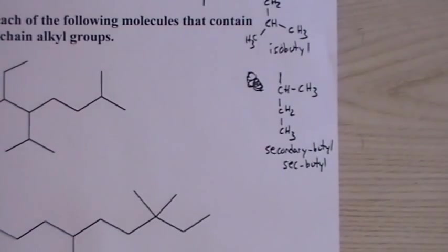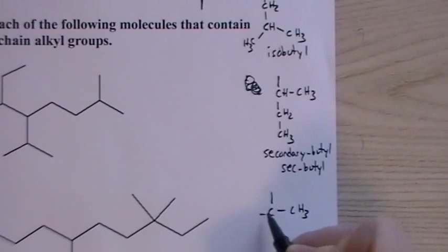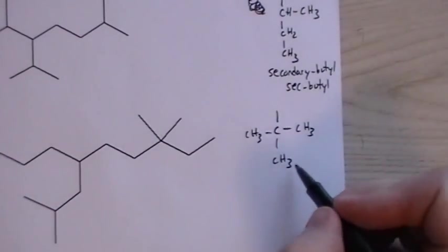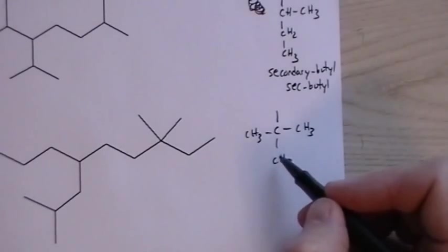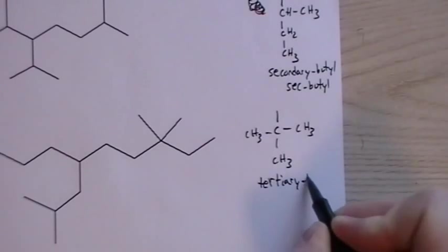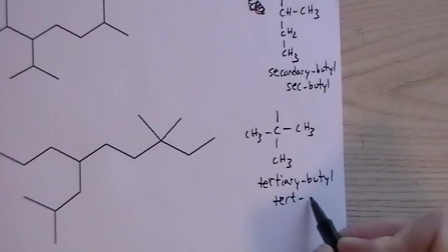Then we have a carbon with a methyl group, methyl group, methyl group. So it's also four carbons but different than the other two. This one is called tertiary butyl and it's also called tert-butyl or t-butyl.